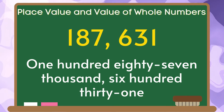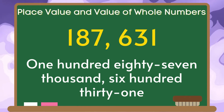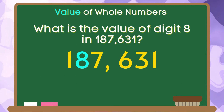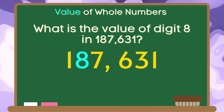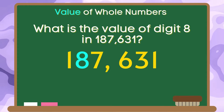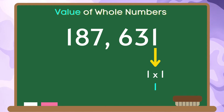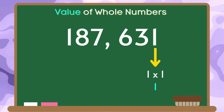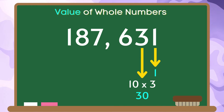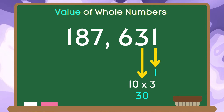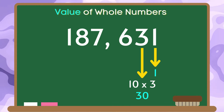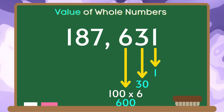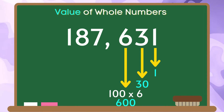Now let's have another example. We have the number 187,631. Let's answer the question: What is the value of digit 8 in 187,631? The place value of 1 is ones, so we multiply 1 by 1, and the answer is 1. The place value of 3 is tens, so we multiply 3 by 10, and the answer is 30. The place value of 6 is hundreds, so we multiply 6 by 100 and the product is 600. Therefore, the value of 6 in this number is 600.